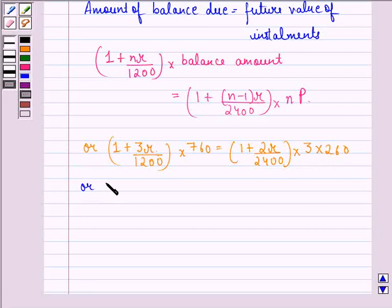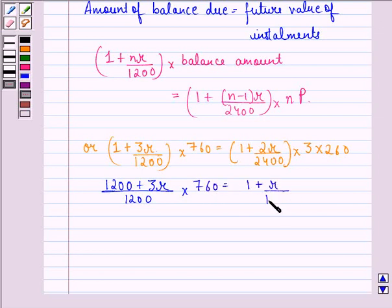Or (1200 + 3R)/1200 × 760 = (1 + R/1200) × 780.